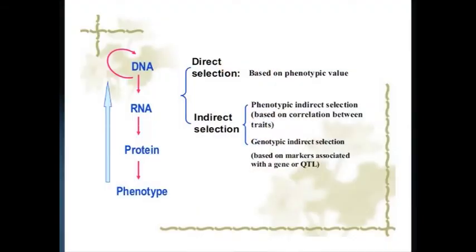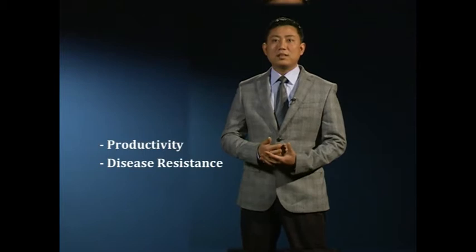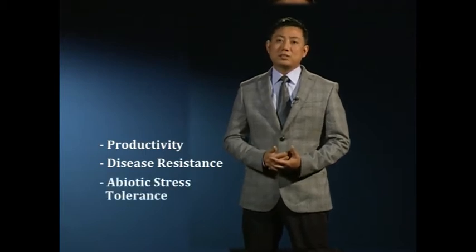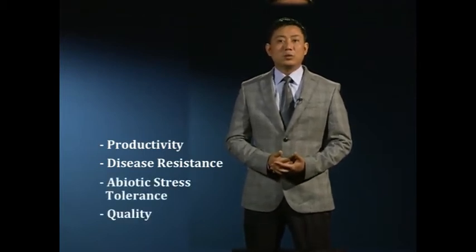Marker-assisted selection, or marker-aided selection, is a process whereby a marker — morphological, biochemical, or one based on DNA or RNA variation — is used for indirect selection of a genetic determinant or determinants of a trait of interest, i.e., productivity, disease resistance, abiotic stress tolerance, or quality.